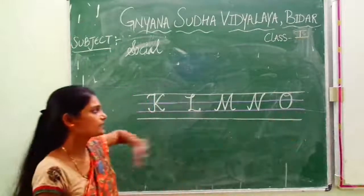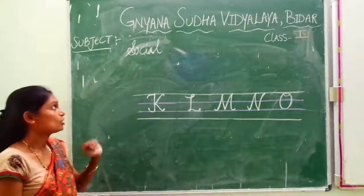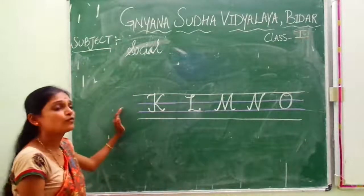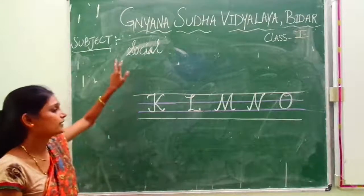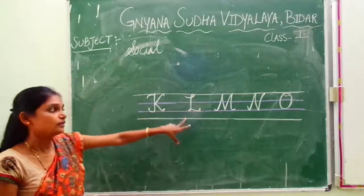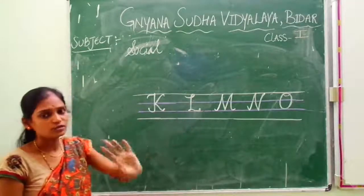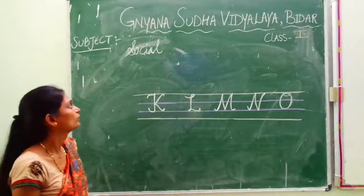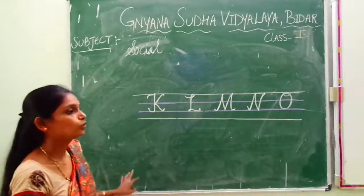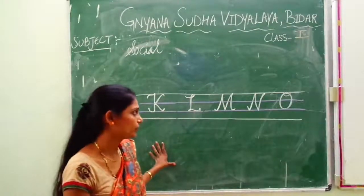Now, how many letters are there? Five letters. So what is your homework? Today's homework — you have to write these five letters in your social book. Cut to five times, children.